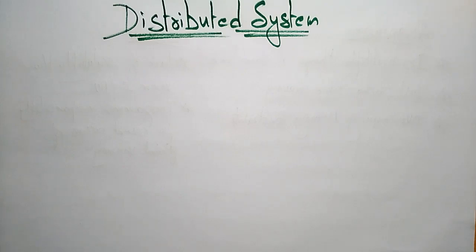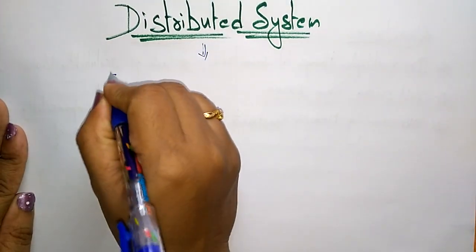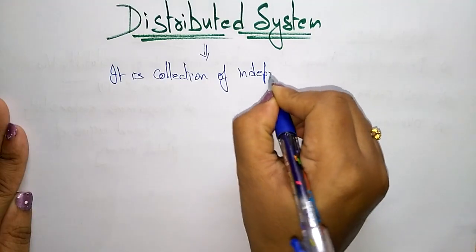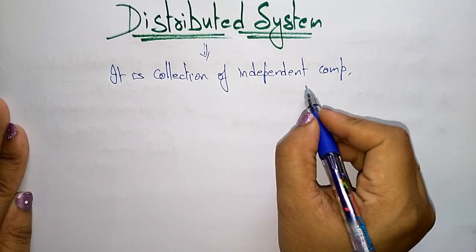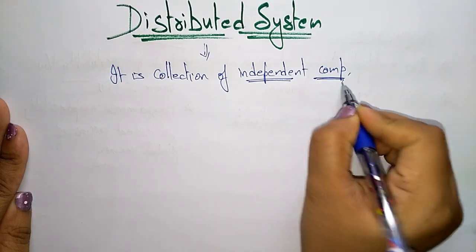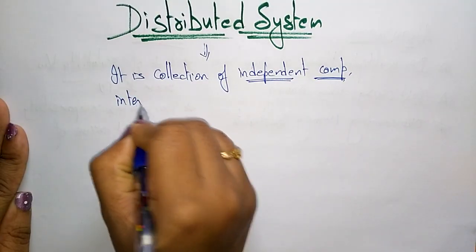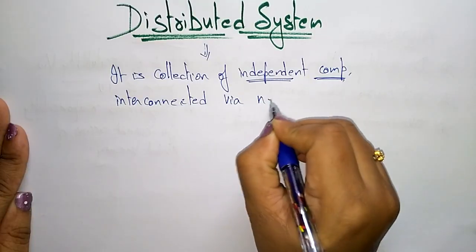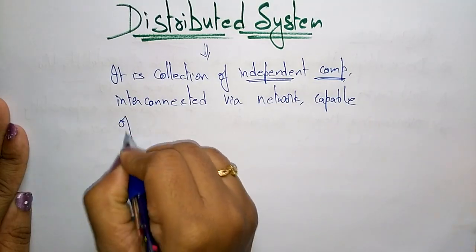Coming to the next topic: distributed systems. This is one type of operating system. A distributed system is a collection of independent computers — one computer does not depend upon another computer. It is a collection of independent computers interconnected via network, capable of collaborating on a task.